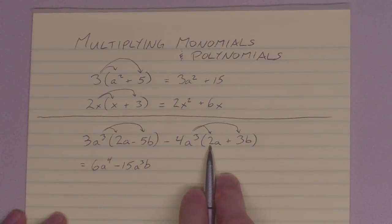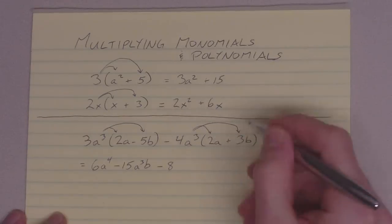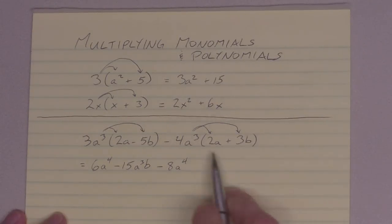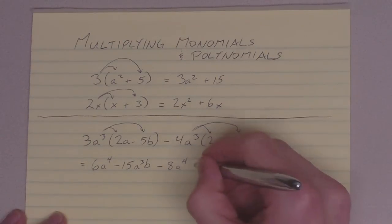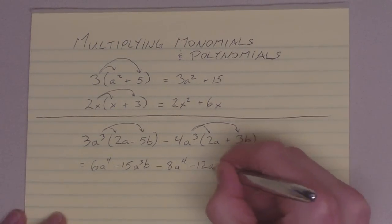Negative 4a cubed times 2a. Multiply the coefficients, add the exponents. And then multiply the coefficients, negative 4 times 3, negative 12a cubed b.